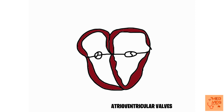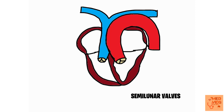The atrioventricular valve on the left side, between the left atrium and the left ventricle, has two leaflets — so it is called the bicuspid valve, also known as the mitral valve. The valve between the right atrium and right ventricle has three leaflets, so it is the tricuspid valve. The major vessels — the aorta and the pulmonary trunk — each have valves with three cusps, called semilunar valves.